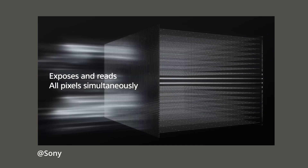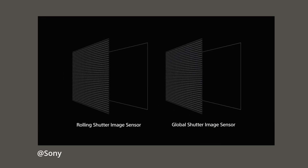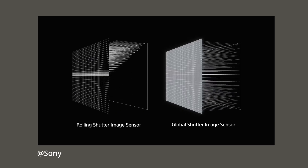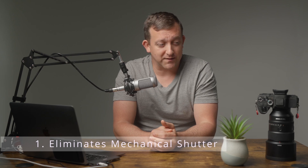A global shutter has an electronic sensor that reads out simultaneously, so it essentially has a readout speed of zero milliseconds. That puts it in a position to not need a mechanical shutter — we can take that mechanical shutter and chuck it out the window. And why is that a big deal? That's the first big reason that I think a global shutter is awesome.